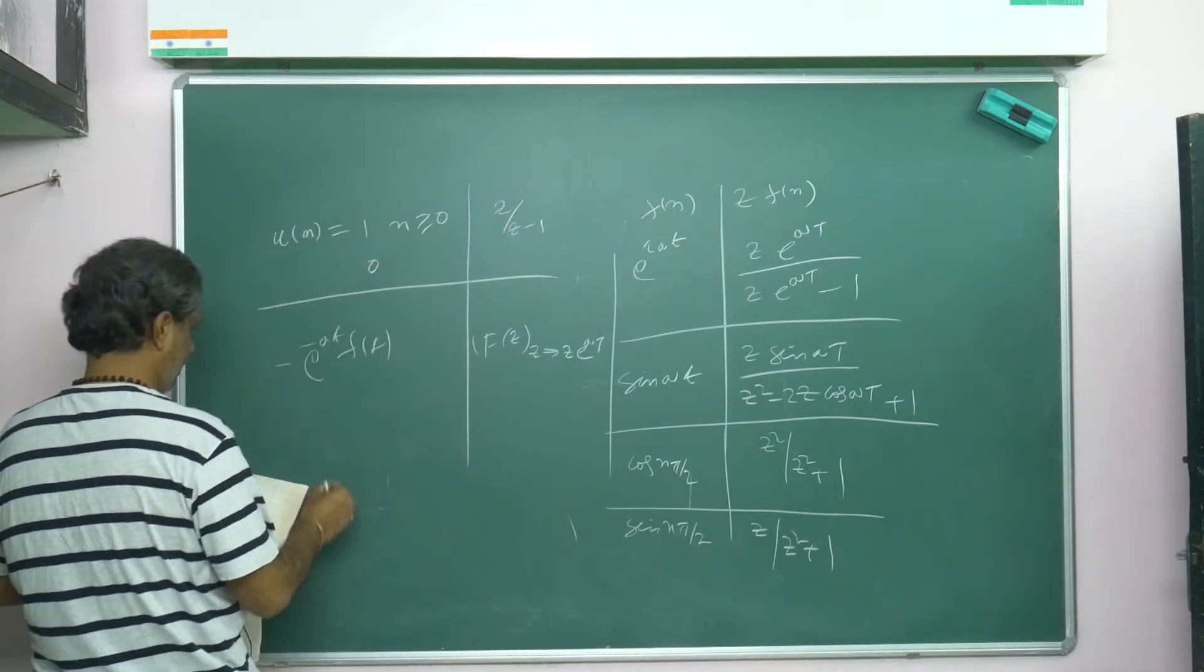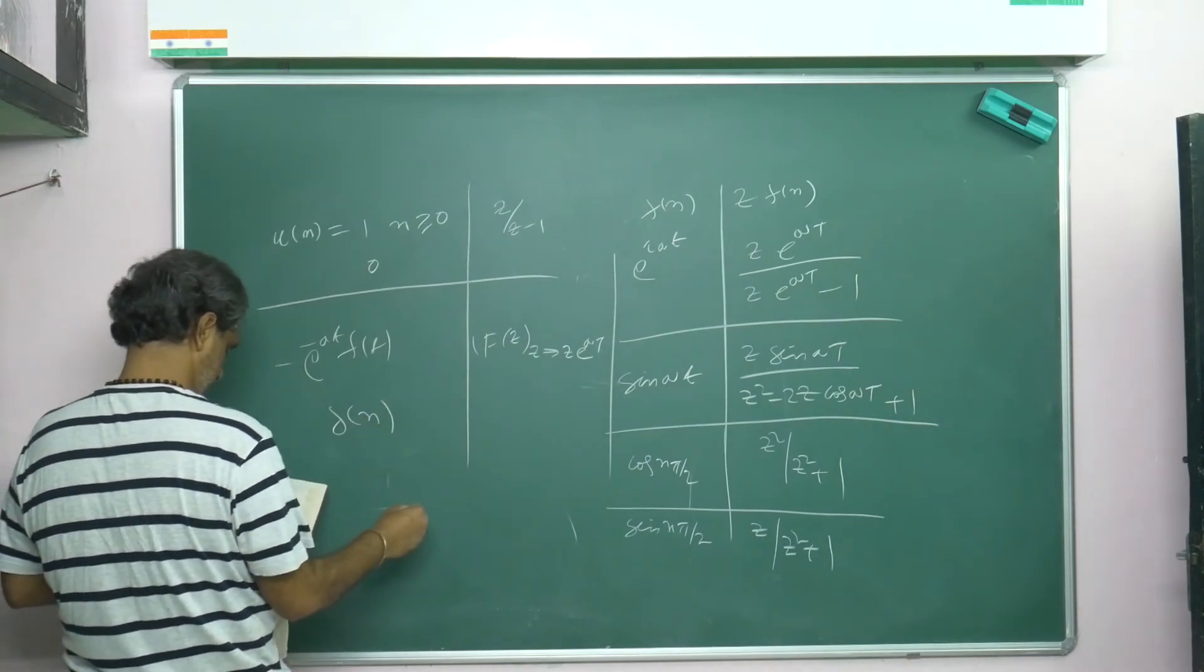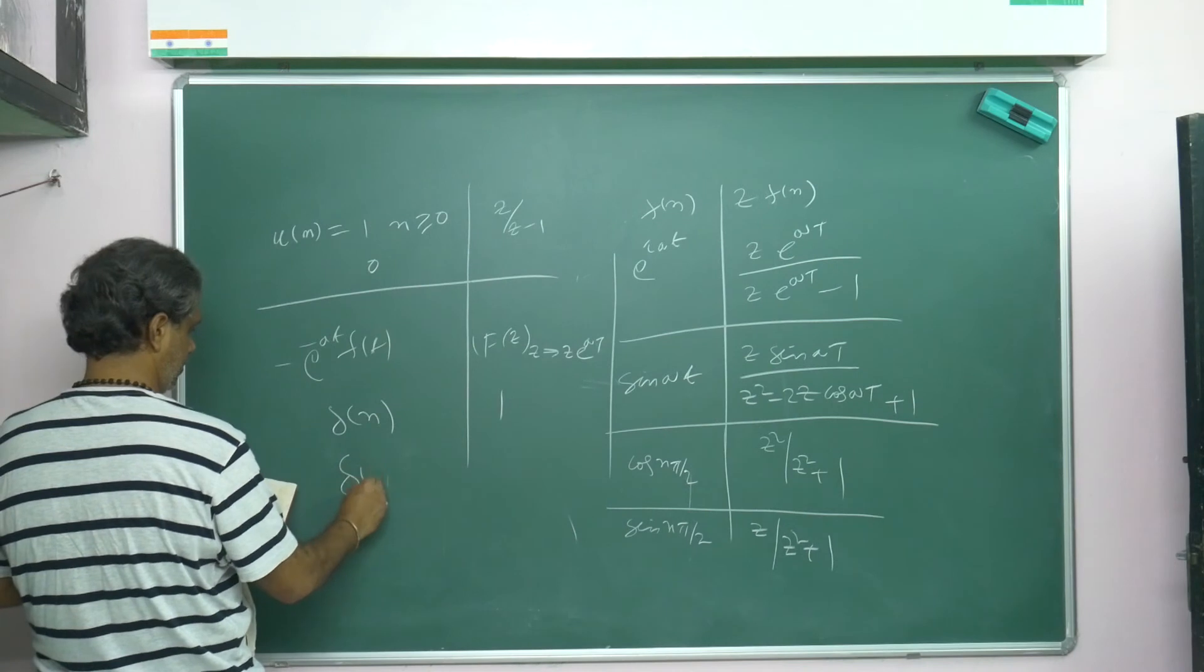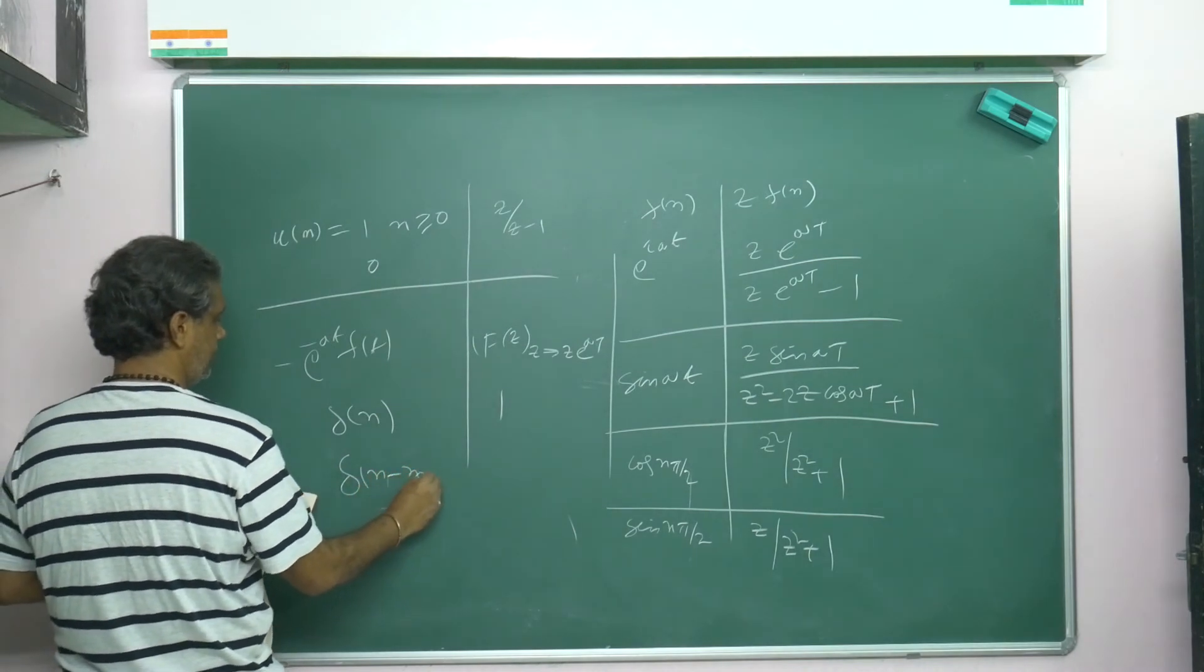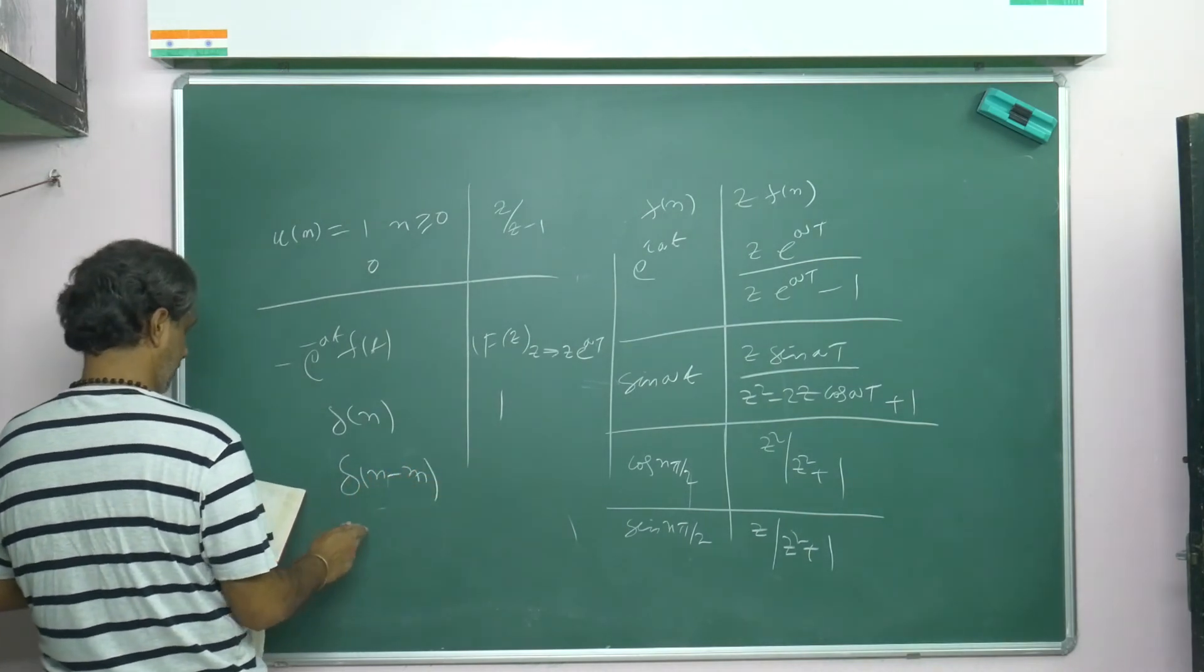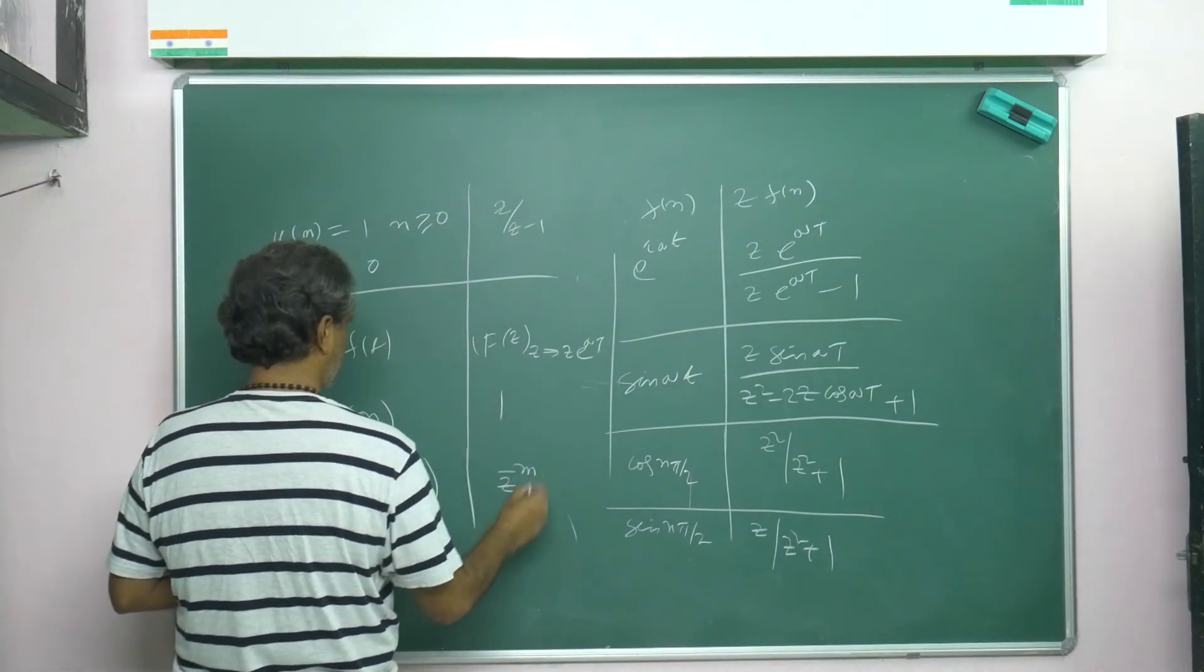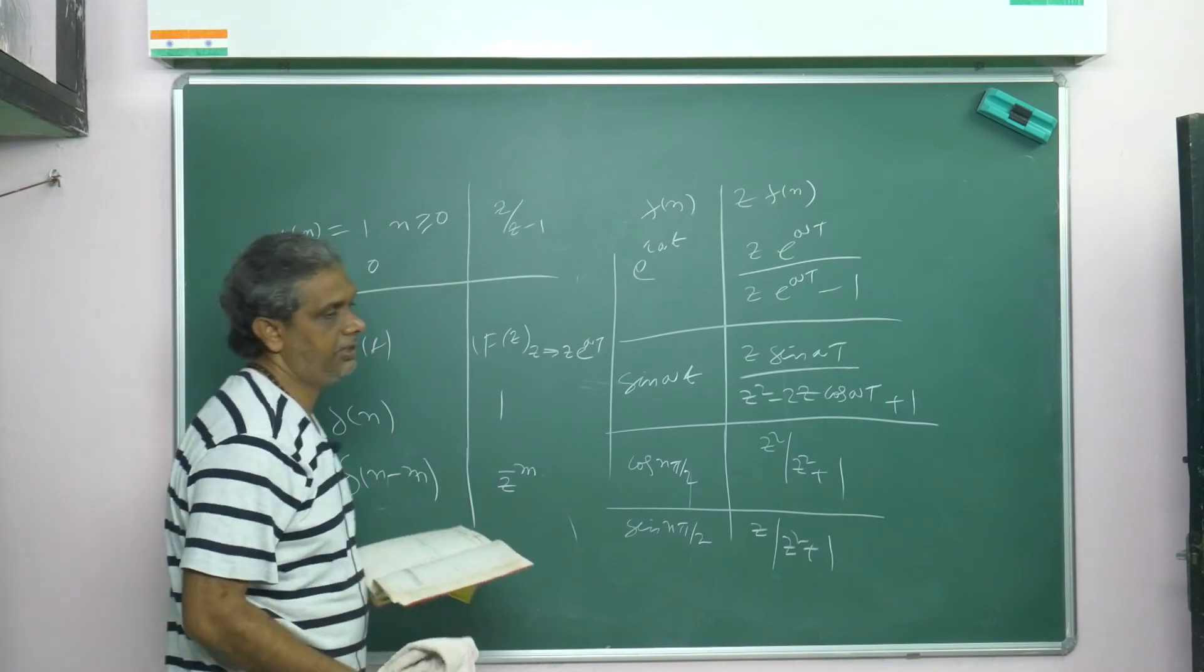Then the Dirac delta function: δ(n) equals 1. Delta, that is the Dirac delta function. In fluid dynamics it will come. Kronecker delta, like this: Z{δ(n)} = z to the power... I think I hope this you can remember.